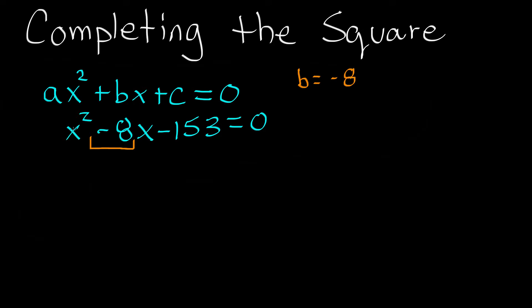The trick with completing the square is we have the x squared term plus some bx term and then some value for c. What we want to do is look at the x squared and the x term and add something to them so we can end up with something of the form x plus some number h, all squared. The idea is if we can find some perfect square, we can rewrite the expression in this form.